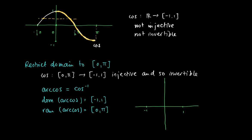Here is the graph of the arc cosine, which is just this part of the cosine curve reflected in the line x equals y. Typical values: at 1 the arc cosine is 0, and at minus 1 the arc cosine has the value pi.